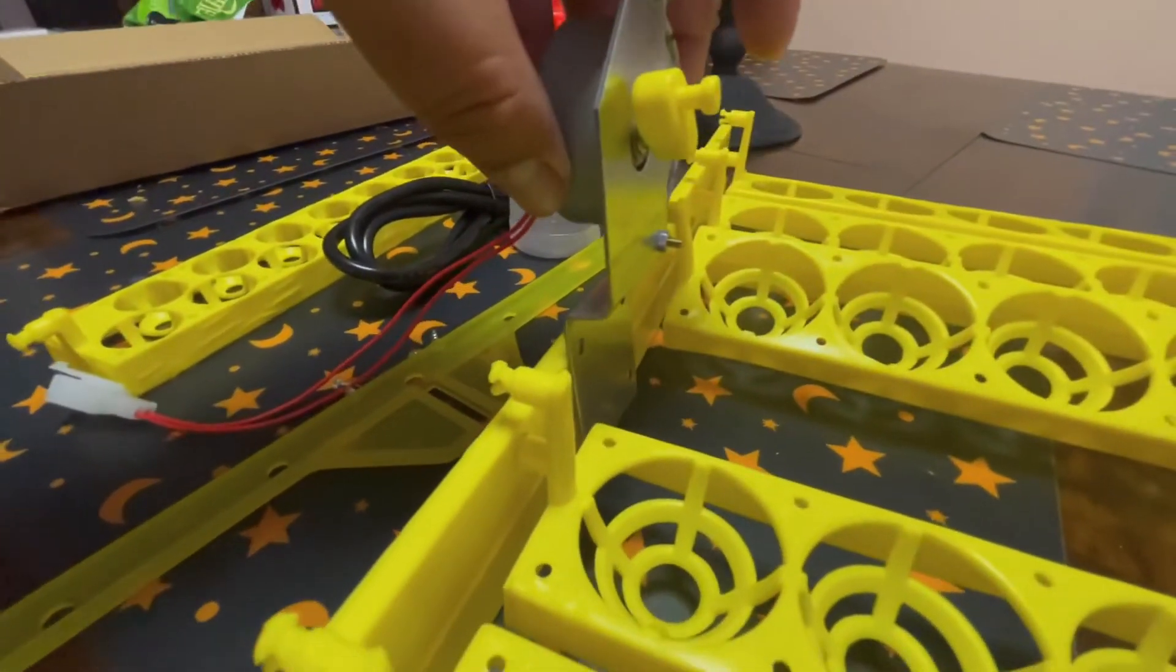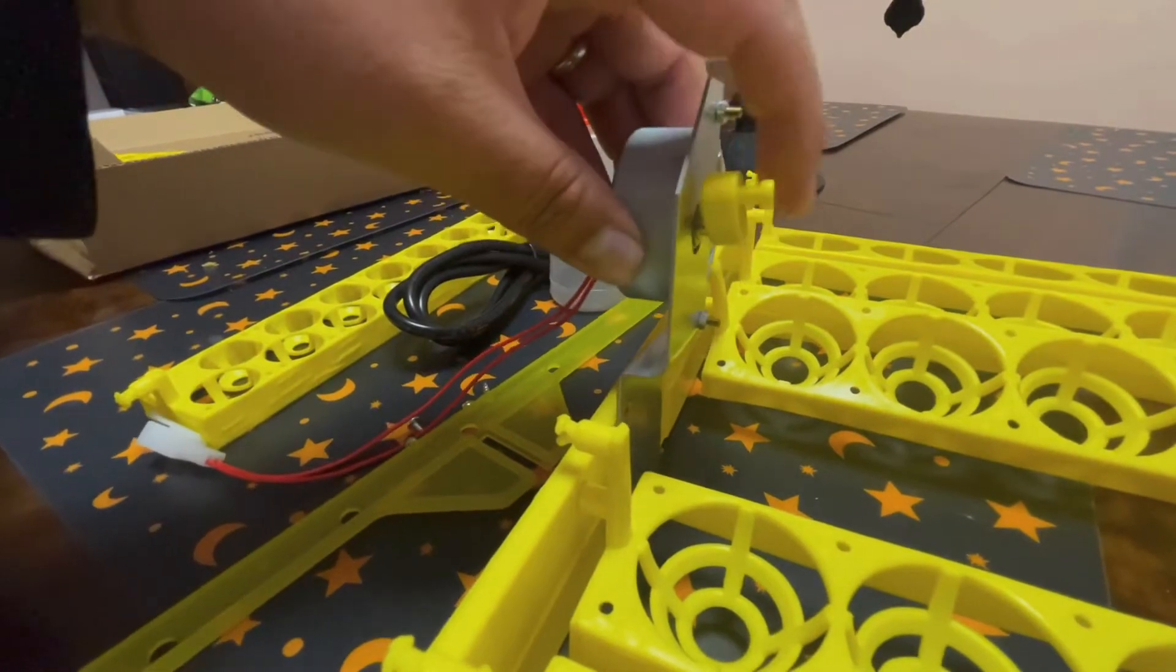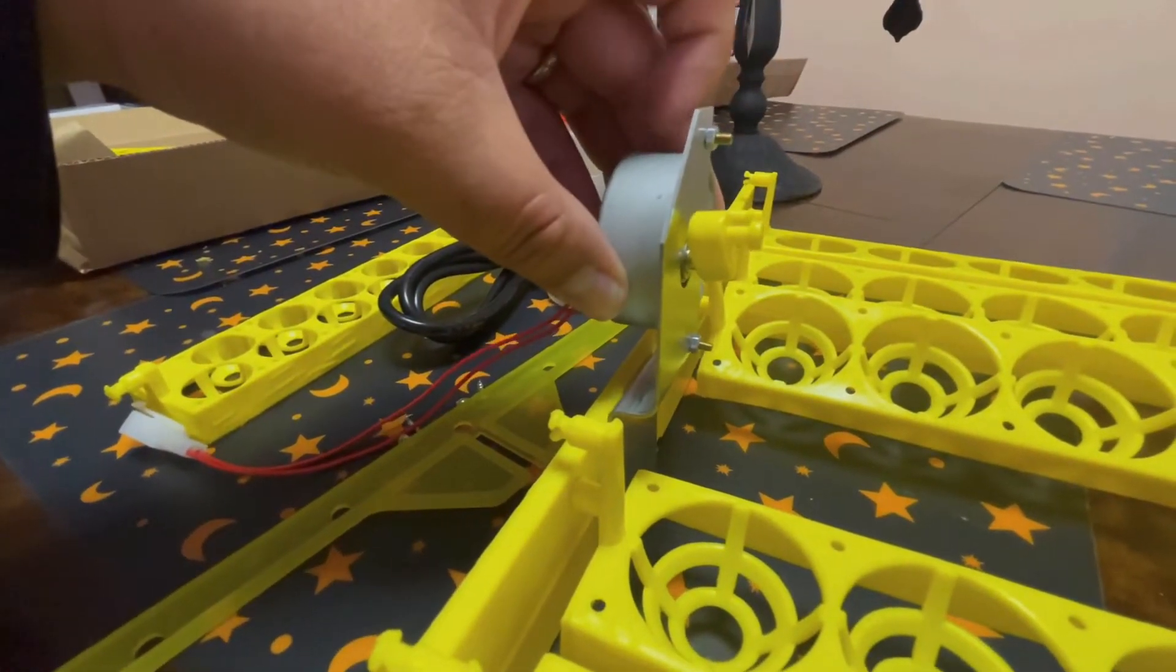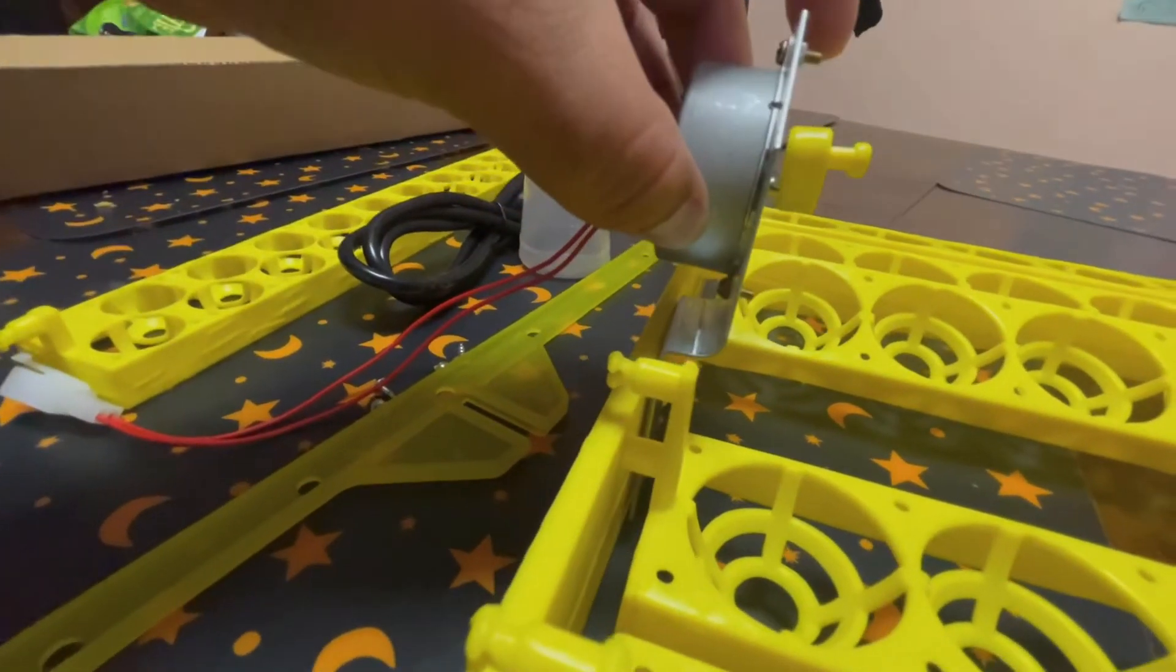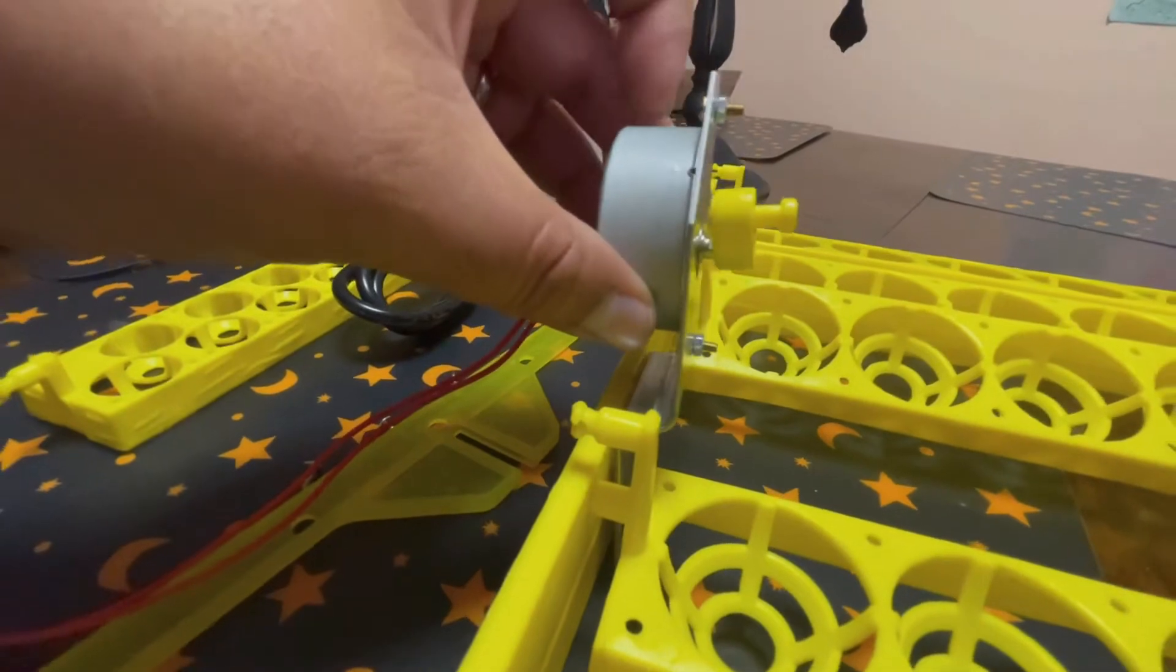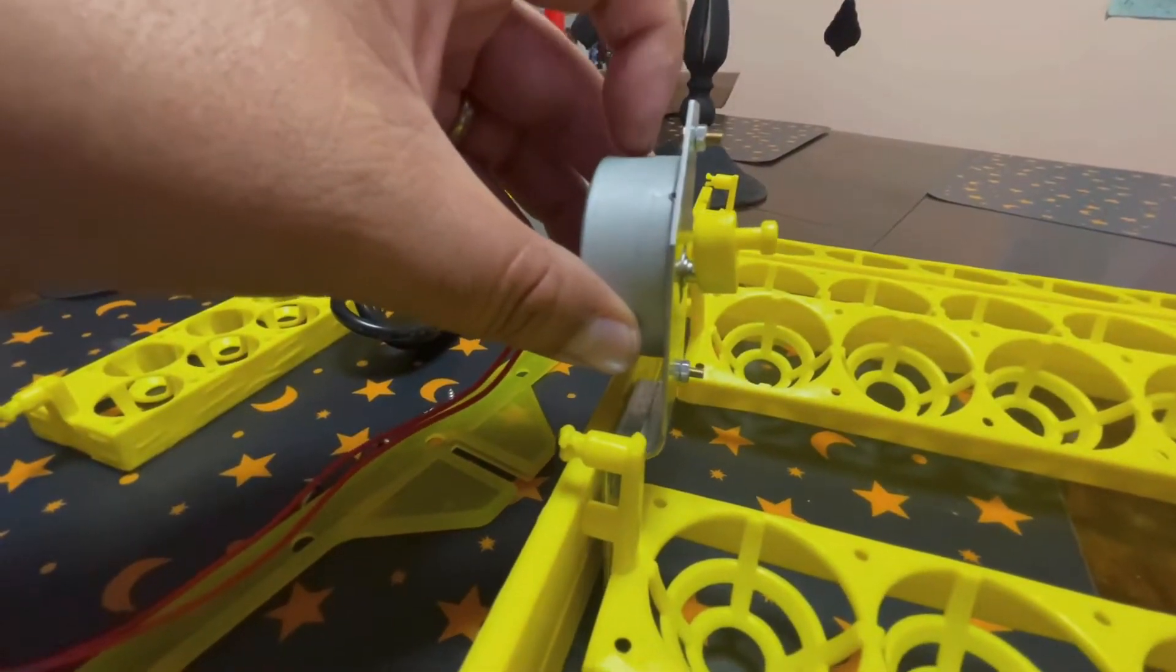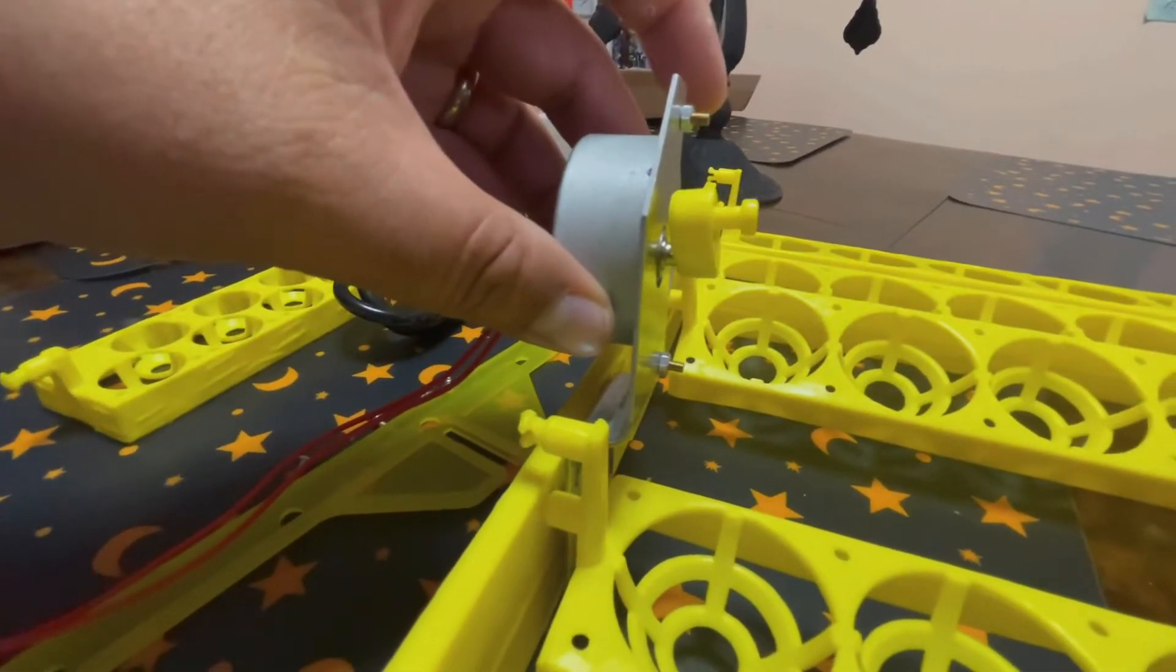So ahorita lo voy a atornillar y yo creo que voy a tener que cambiar el motor a este lado. I'm going to screw it back on this way now, so it has a little bit more room for that yellow plastic right here. And then once I screw it on, I'll probably have to switch out the motor to this side. So we'll see what happens.